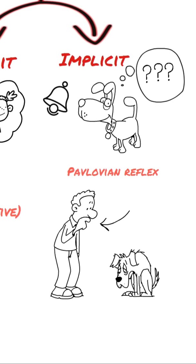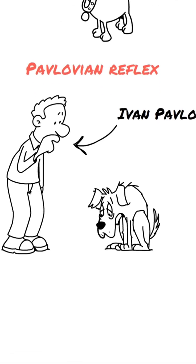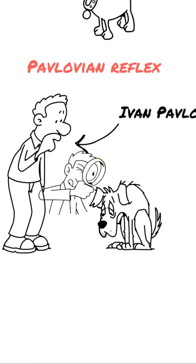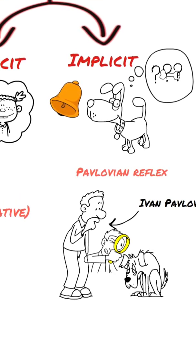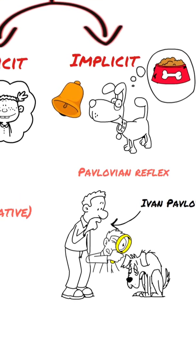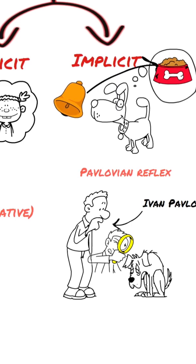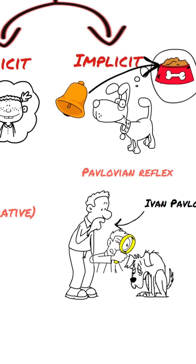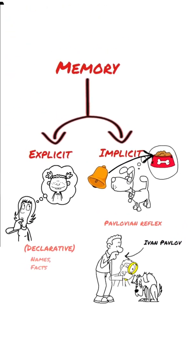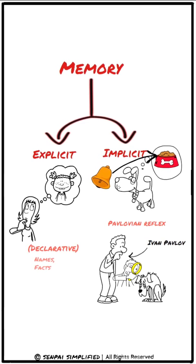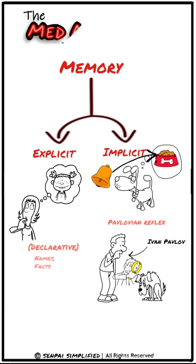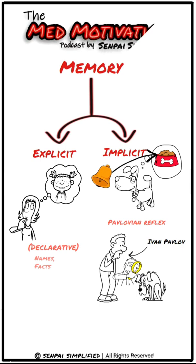A Russian psychologist named Ivan Pavlov was doing experiments on his dog. He used to ring a bell every time he served food to his dog, and the dog associated that bell sound with the food. So even without seeing or smelling the food, the dog would start salivating when it heard the bell. The dog associated the food with the bell due to repeated exposure.